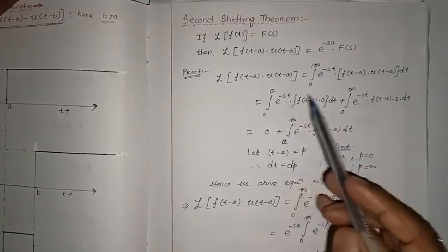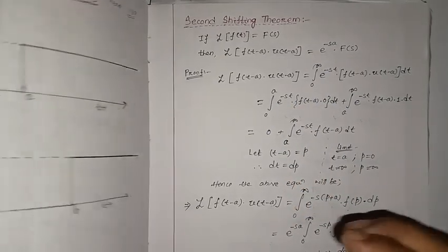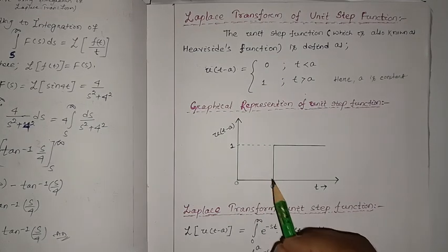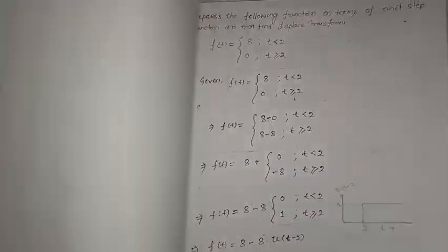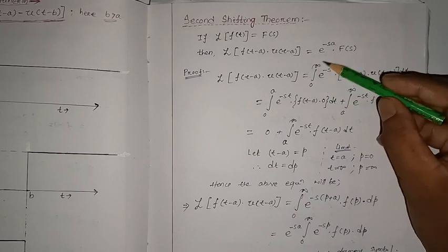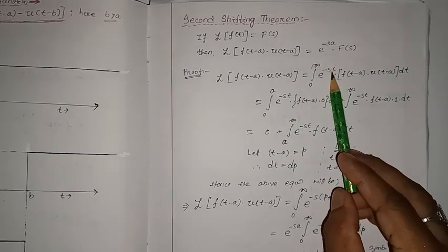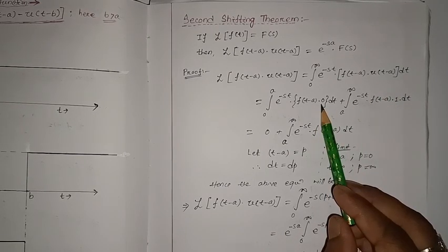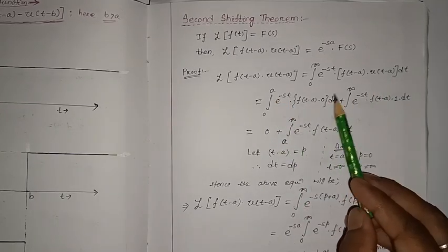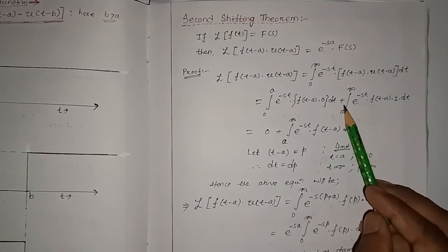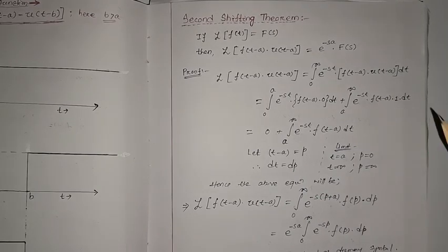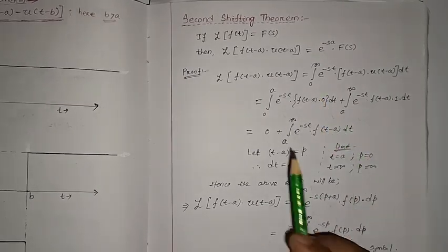I'm going to segregate this limit as zero to a, then a to infinity. Because the unit step function value is zero when t is less than a, and one when t is greater than a. So from zero to a, u(t minus a) equals zero, making that term zero. From a to infinity, u(t minus a) equals one, giving us the integral of e to the power minus st into f(t minus a) dt.